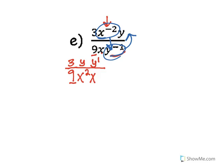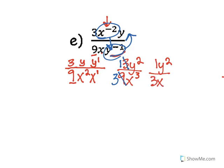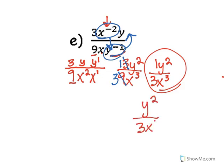On the numerator I have three, y, and y — that's three y squared. On the denominator I have nine, x squared, and x to the one — nine x to the third. I can simplify three-ninths: three goes into three once, three goes into nine three times. Final answer: y squared over three x to the third.